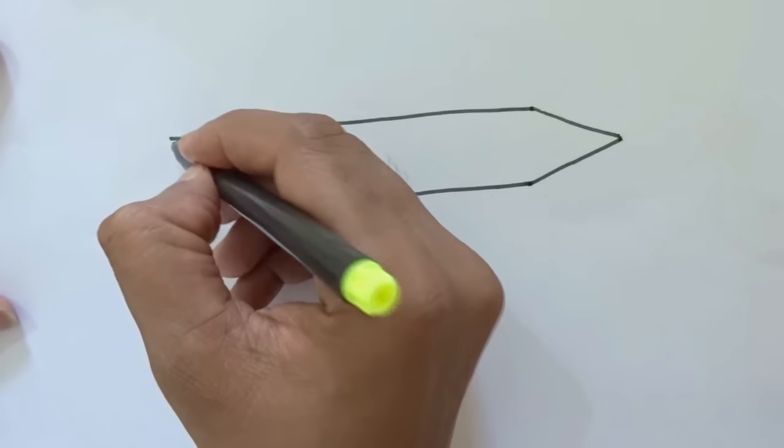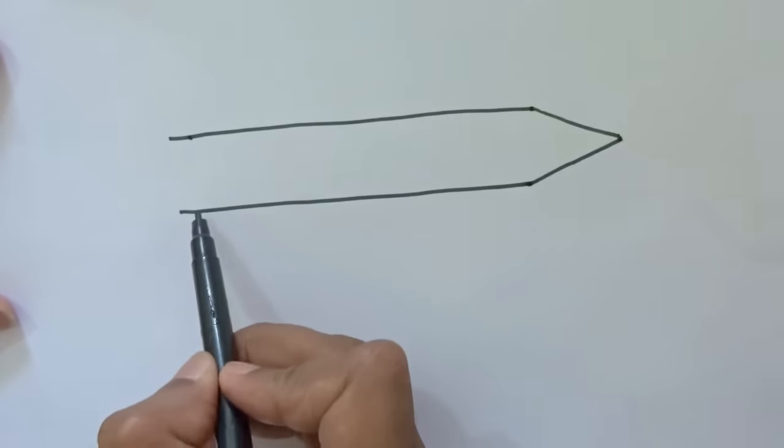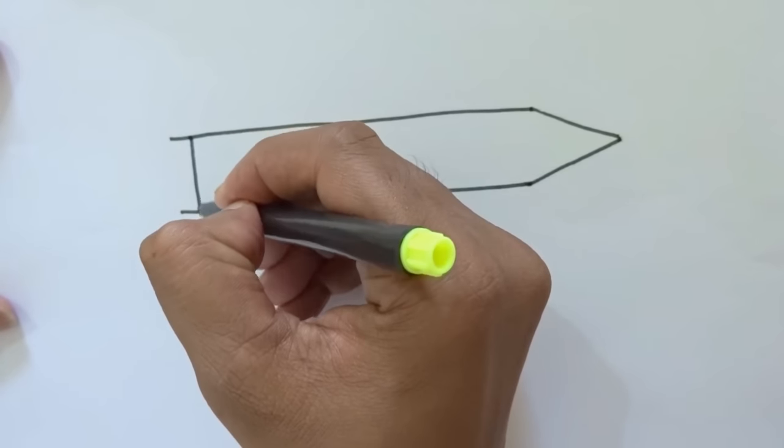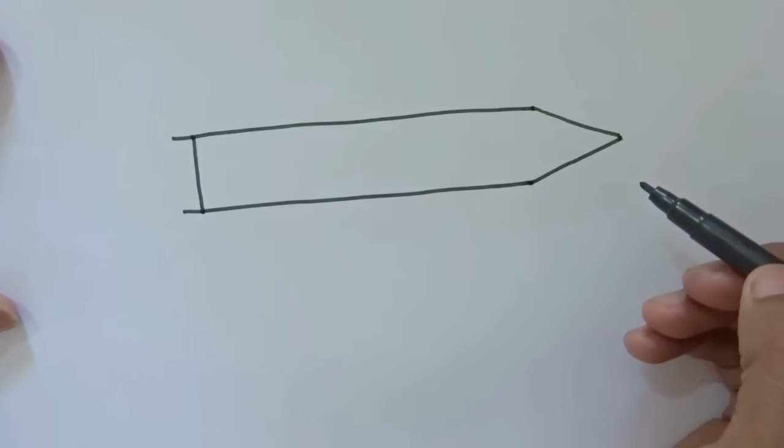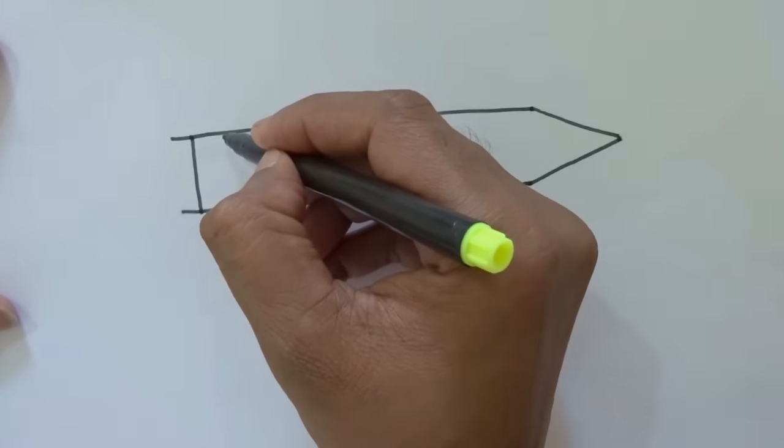Now you can join from here, this to this line, this point. Sorry, yes, like this. Then another one.